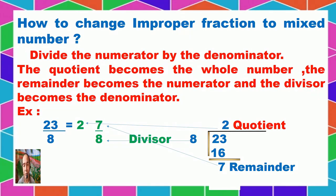Our first digit quotient is 2. 2 times 8 gives us 16. So we subtract: 23 minus 16 gives us 7. 7 can no longer be divided by 8, so this becomes our remainder. Now we will distribute the result of our division. So 2, which is the quotient, will become our whole number.